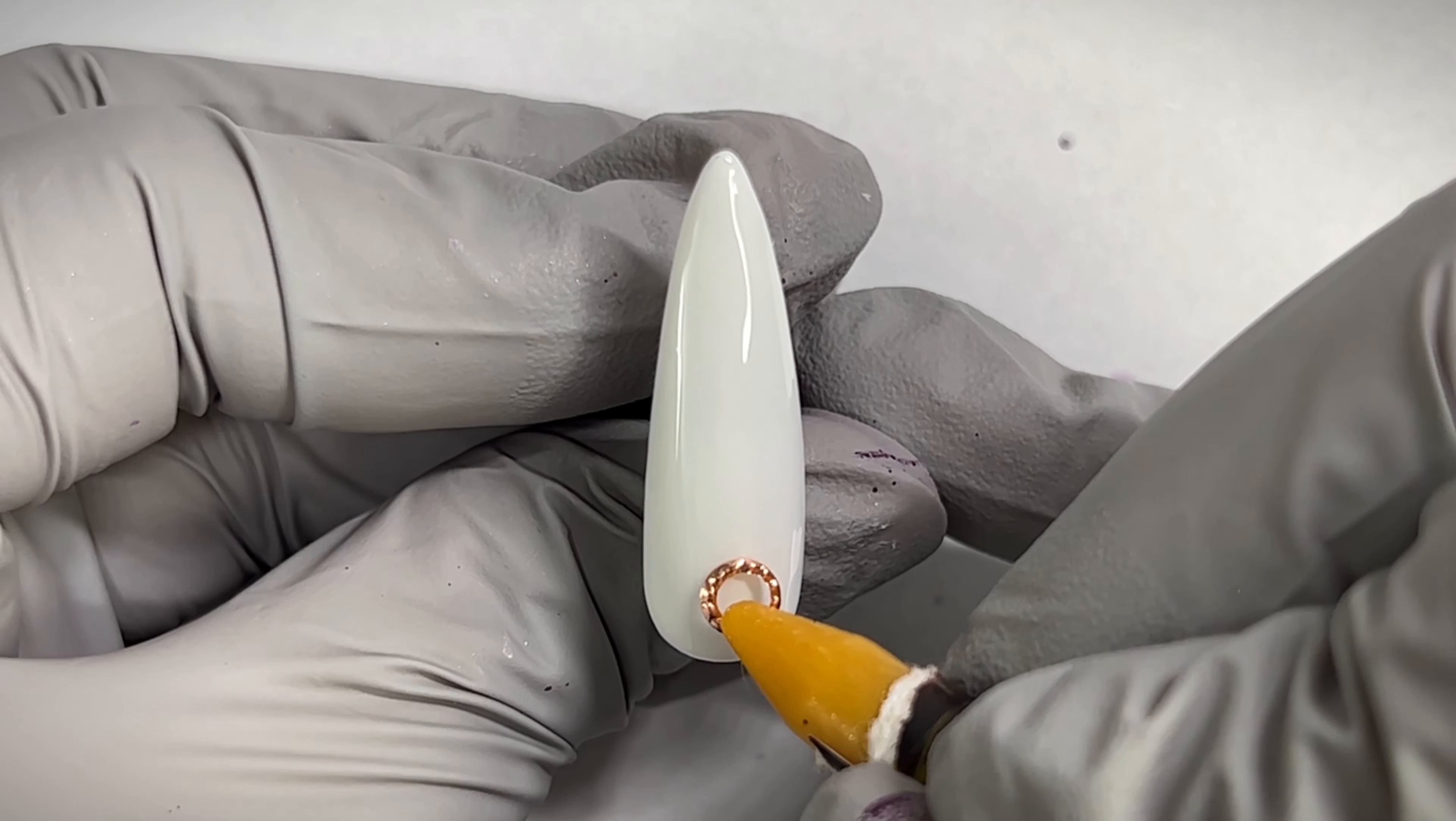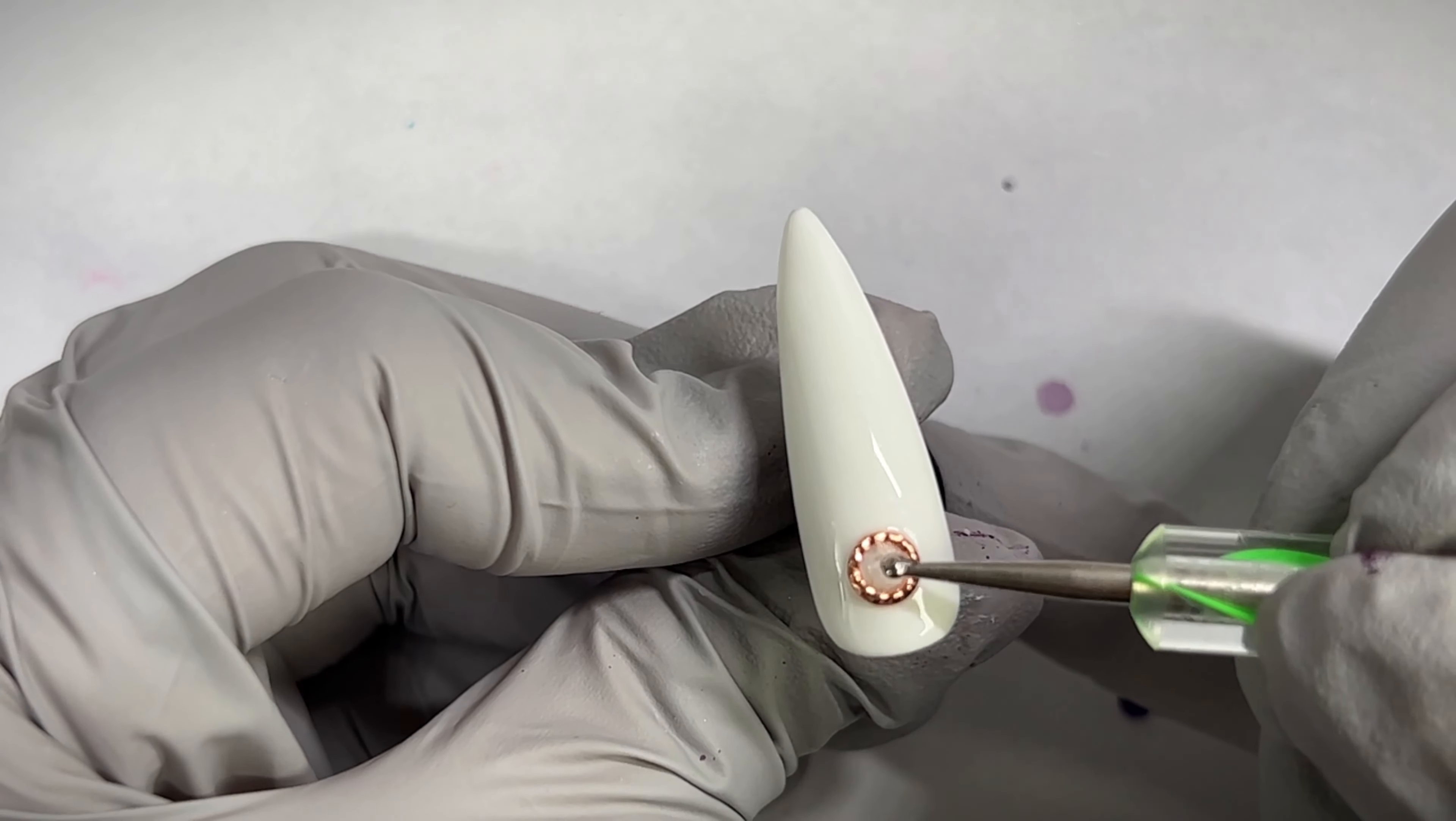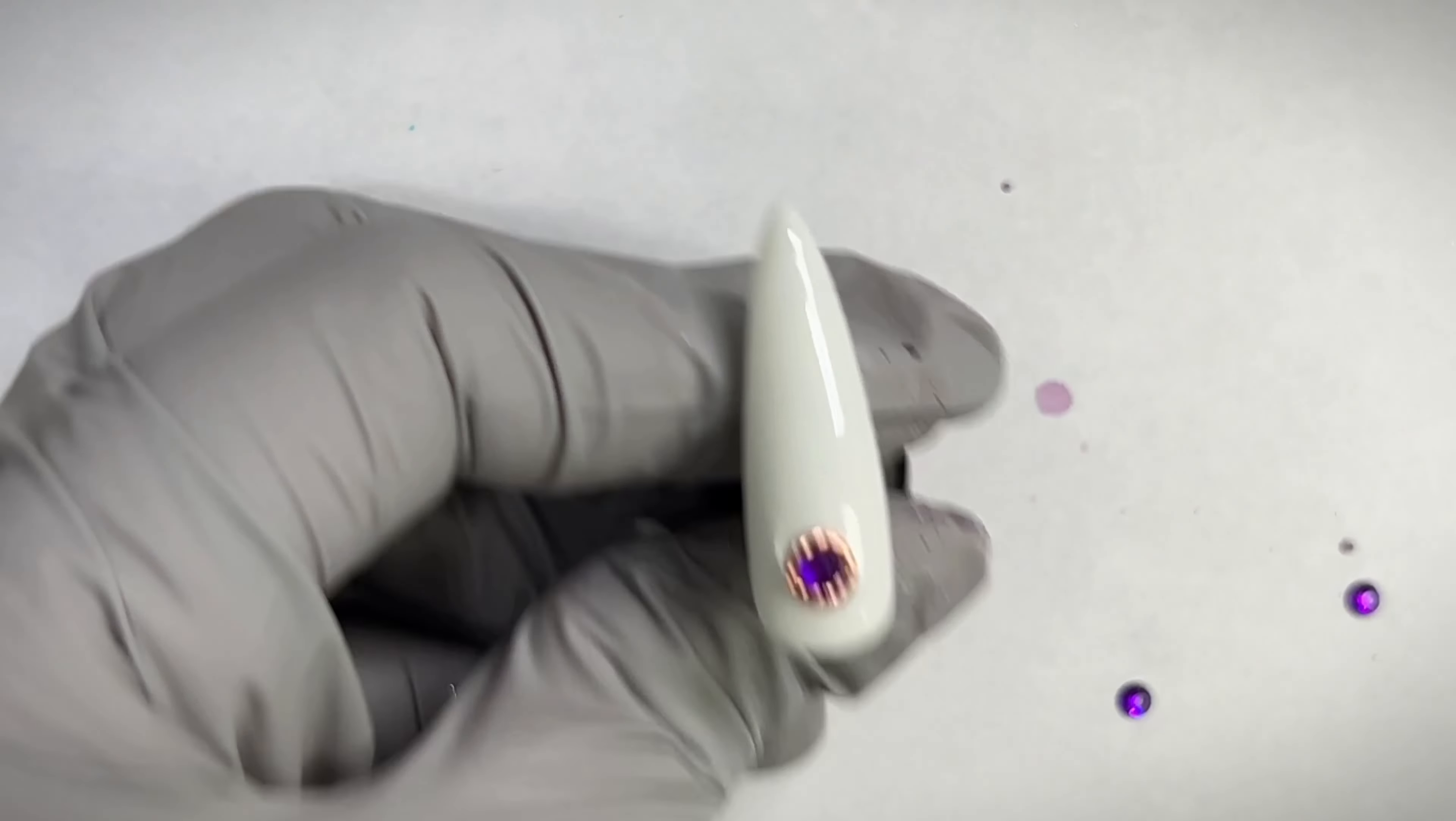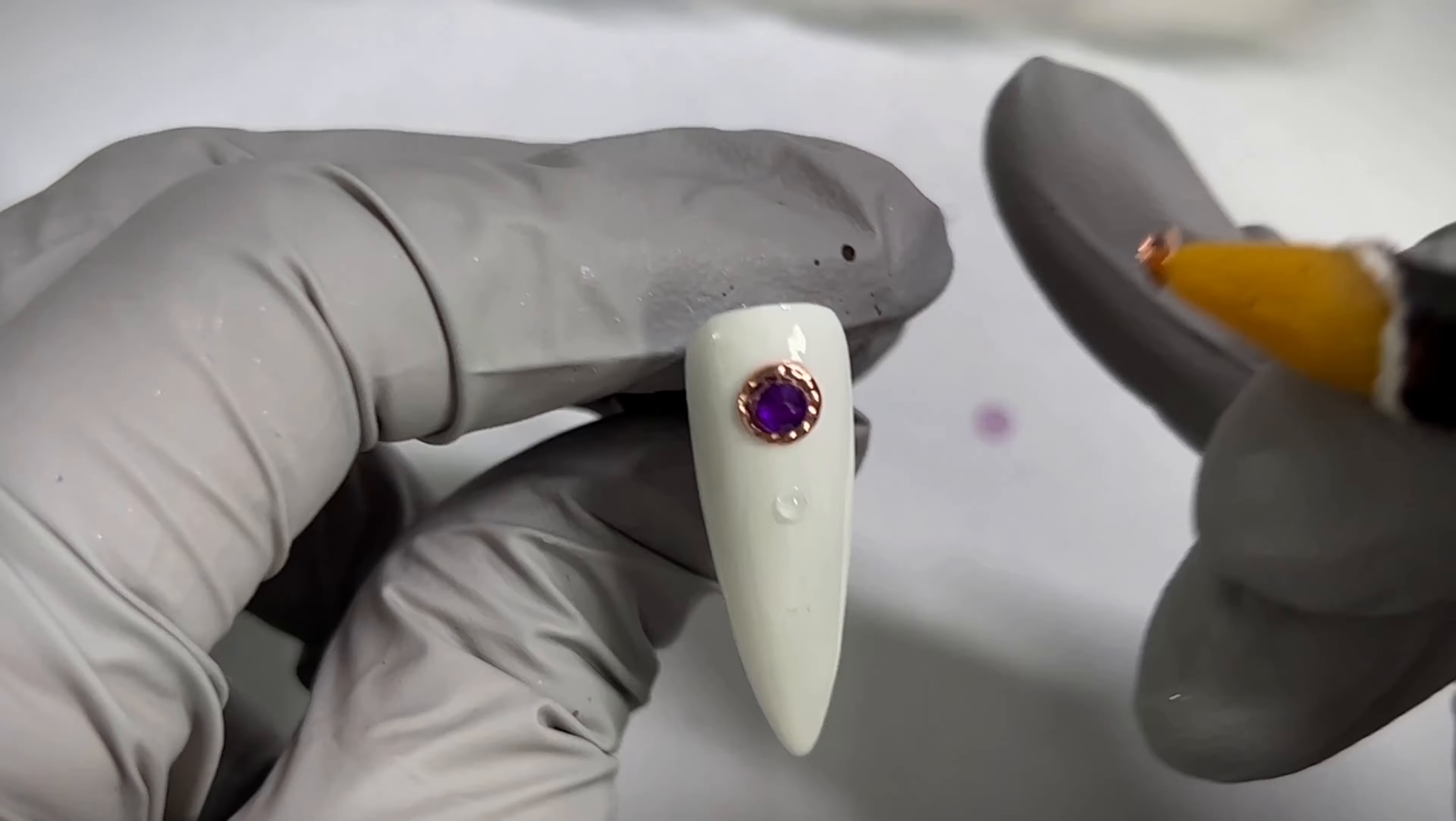For this other nail, I used a mixture of top coat and rhinestone glue from Mikart to adhere these charms and I really loved the way these popped on the white background. I did get these rose gold charms from Shein I believe. If I could find that, I'll make sure to link it.